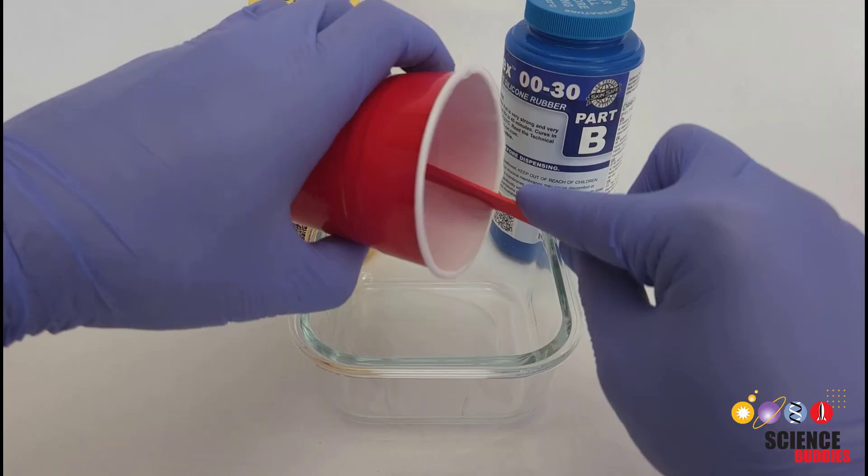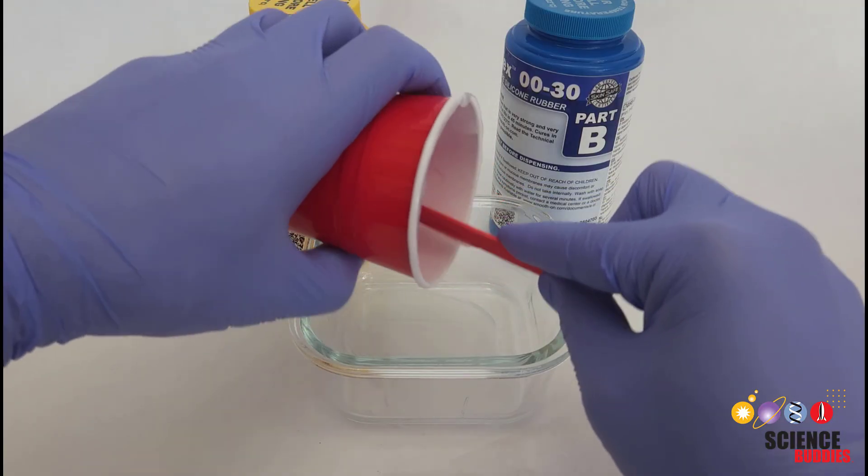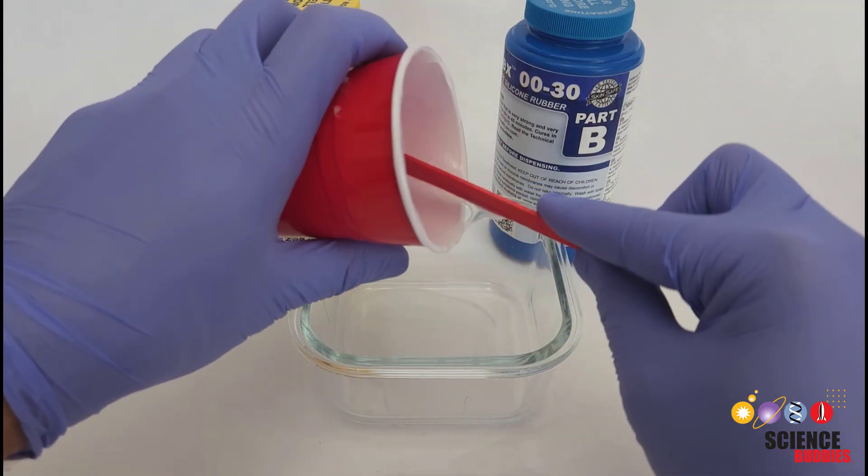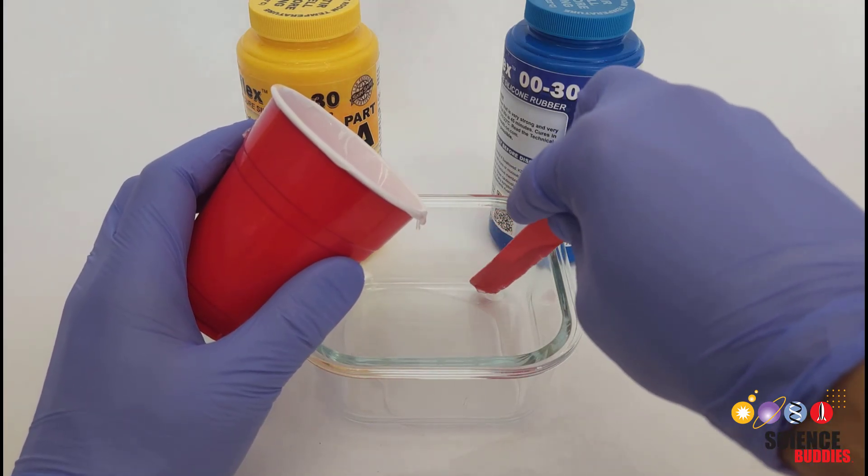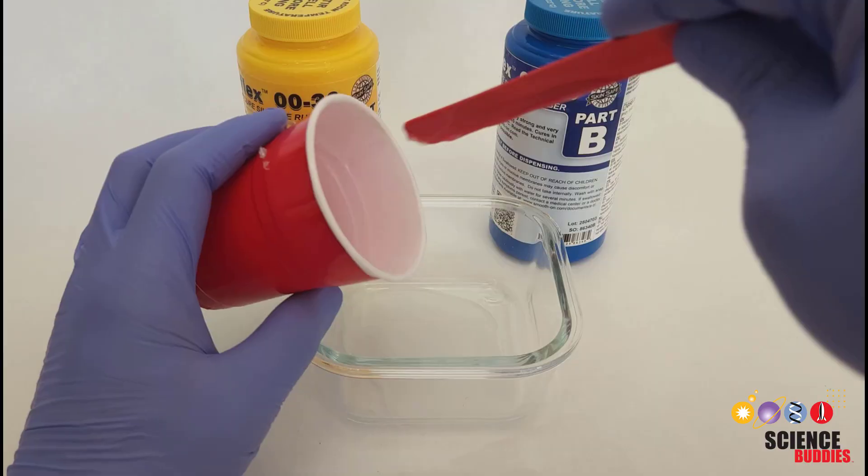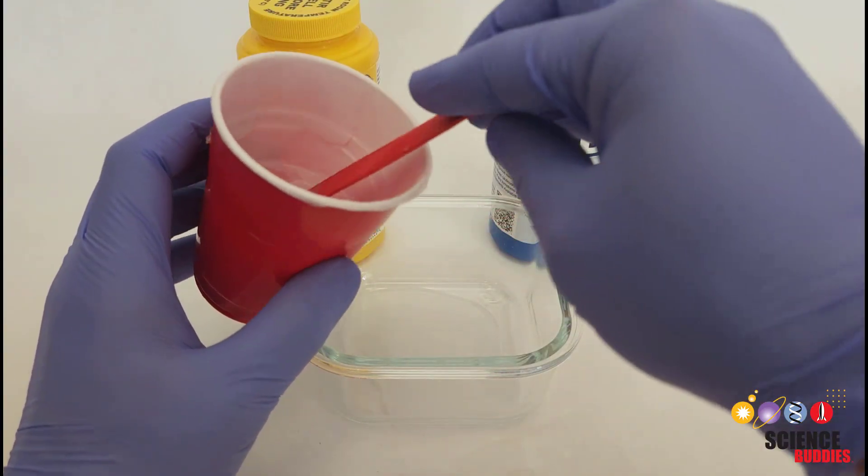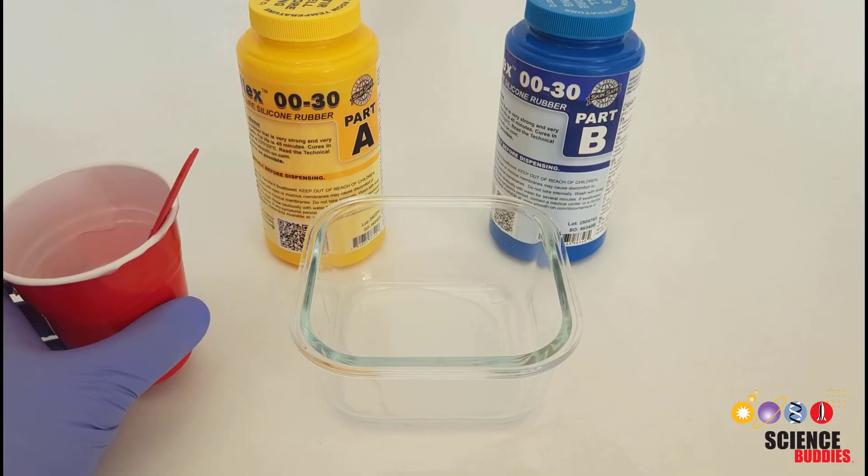This is something you can experiment with if you're doing this for a science project, trying different thicknesses of the silicone, but I am just going to eyeball it. You can see maybe I didn't mix quite enough there. It didn't spread out to cover the whole tray, so I'm going to add a little more just to make sure it covers the bottom of the entire tray in a layer a few millimeters thick.